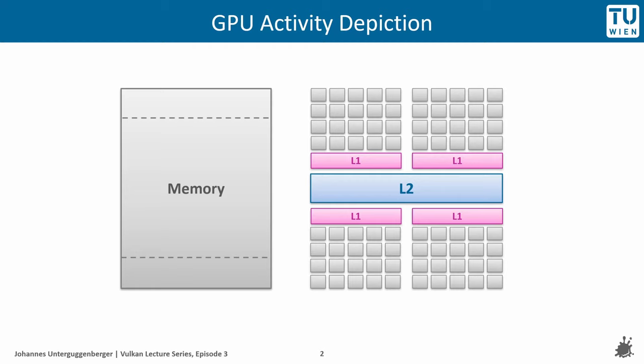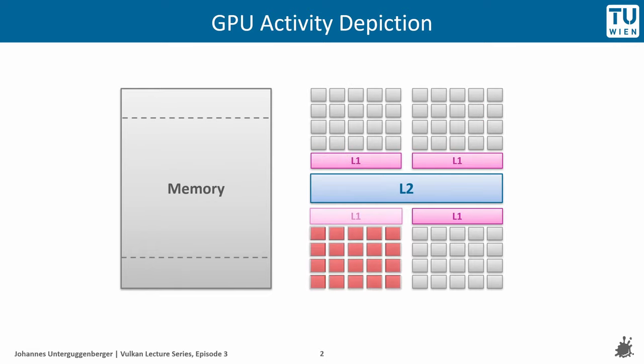Before we start, I am going to introduce this abstract depiction to indicate GPU activity, which I am going to use in this lecture episode and also in other episodes. We can see GPU memory, the level 2 cache, and several clusters of cores, each of them having a level 1 cache and multiple cores. Flashing of the cores indicates computing activity in the respective cluster.